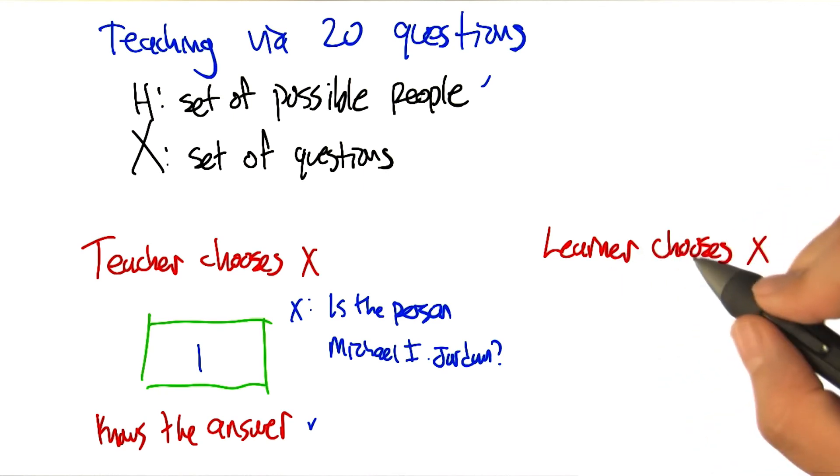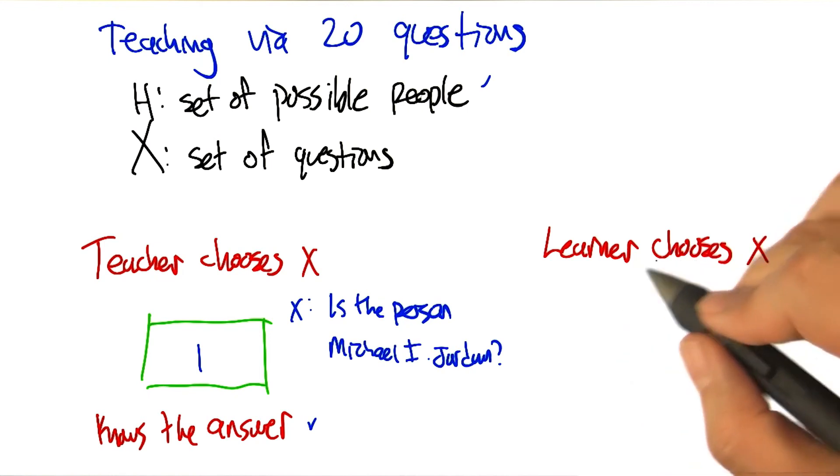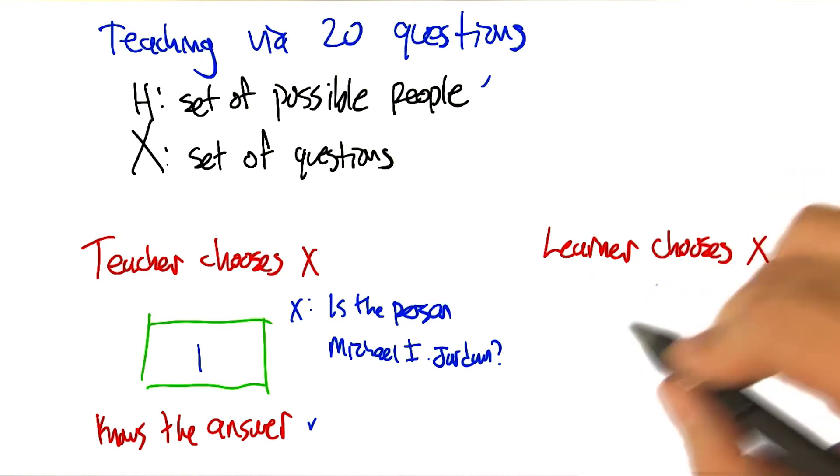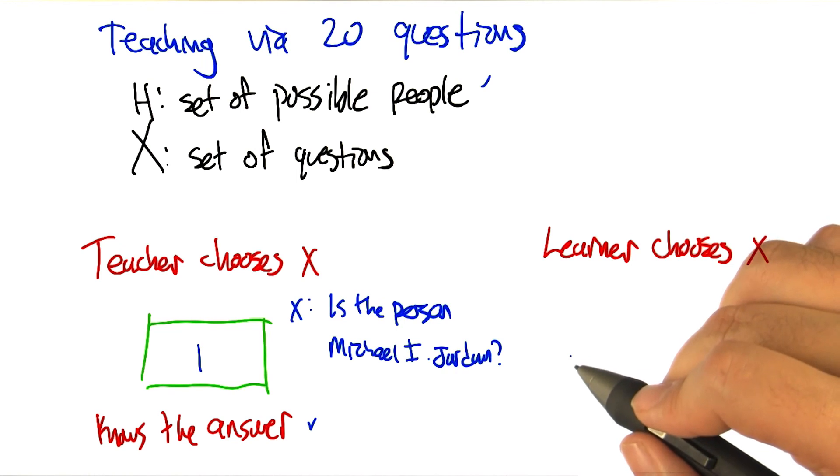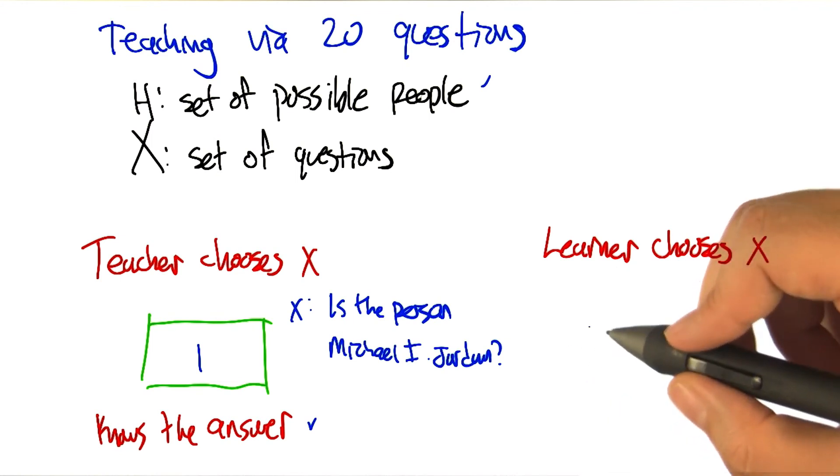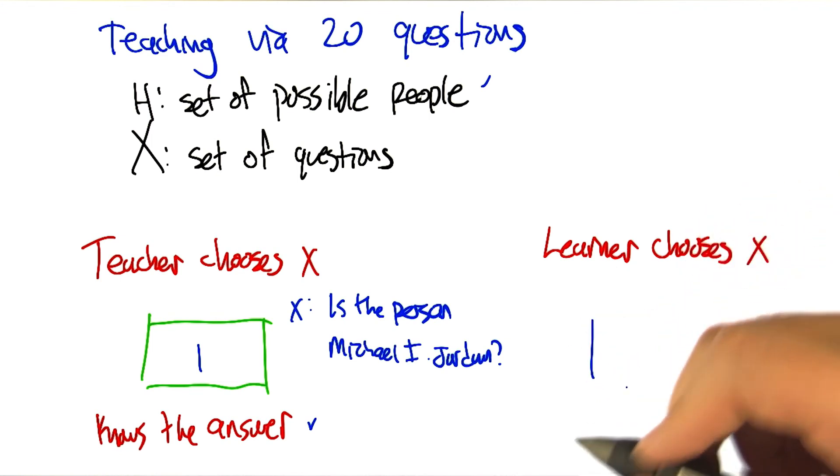If the person started, if the learner started to ask questions like, is the person Michael I. Jordan, the answer is very likely to be no. In which case, that's not very helpful. Now, a really helpful teacher could potentially change the target. But that's definitely cheating. Hm. Okay, fair enough.